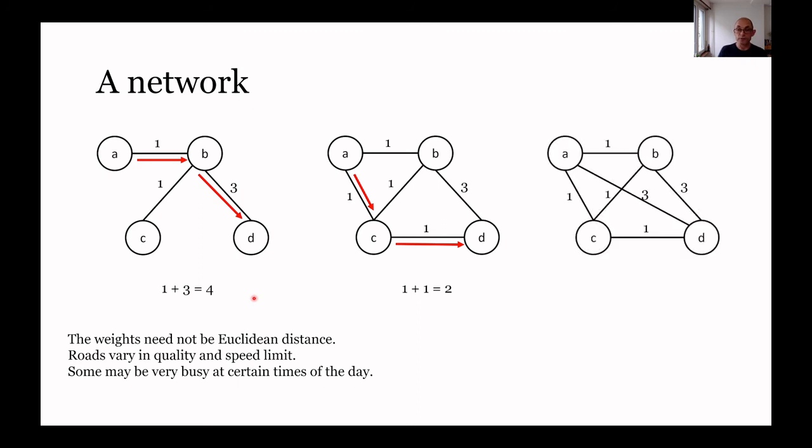If we introduce yet another road that goes directly from A to D, we can see here that it has a cost of three, which means that it is still cheaper, faster, however we want to define this, to travel via C. Despite the fact that we have a direct connection from A to D, the cost of traveling along that direct connection is higher than traveling via C.